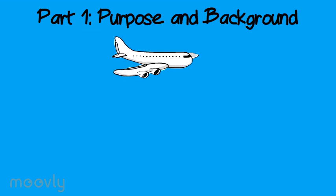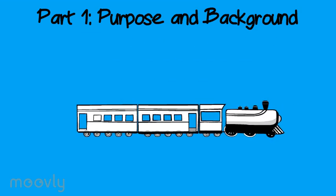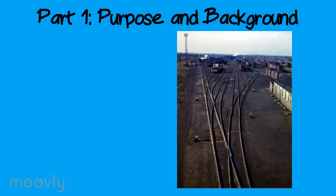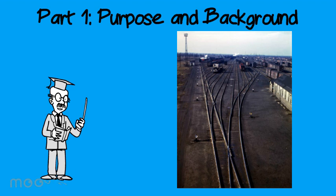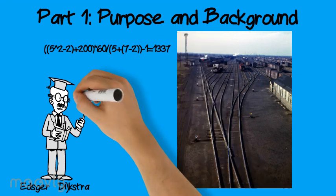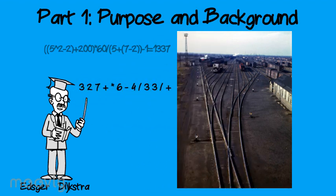Long before we had planes, we used trains to transport goods from one place to another. When trains needed to be stored, they were docked in a place called a classification yard or shunting yard. Notice in this picture of a shunting yard that each entrance point can admit only one train at a time, and to get to the trains in the back, the trains in the front must first be removed. In 1961, an awesome mathematician and programmer named Edsger Dijkstra published a method for converting between infix notation and reverse polish, or postfix notation, for mathematical expressions. Dijkstra's algorithm was named the shunting yard because it operates similar to a railroad classification yard, in that objects are handled using a last-in, first-out method.